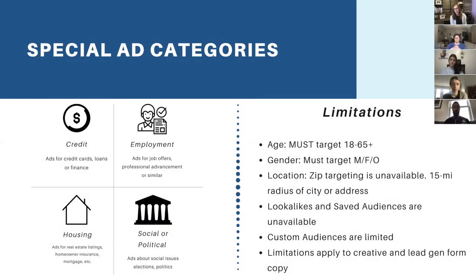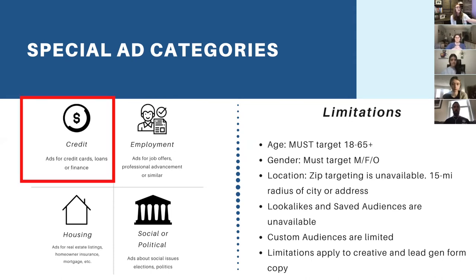There are four different types of special ad categories: credit, employment, housing, and social and political. Under credit, that means ads that are related to credit cards, loans, or finance.